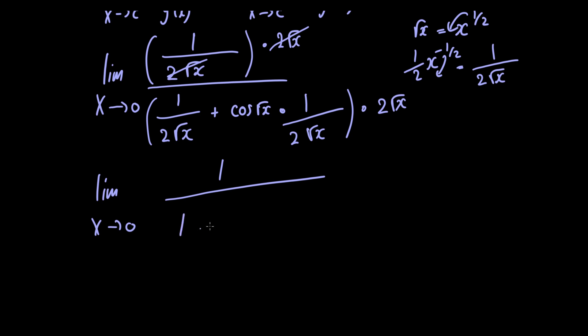The same happens in the denominator, leaving us with 1 + cos(√x). Letting x approach 0, we get 1/(1 + cos(0)) = 1/(1 + 1) = 1/2.